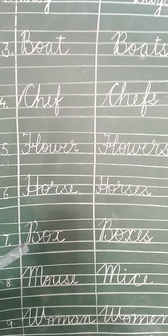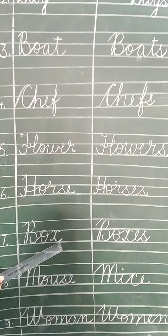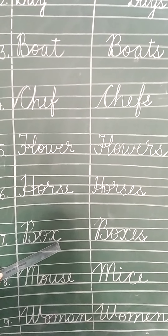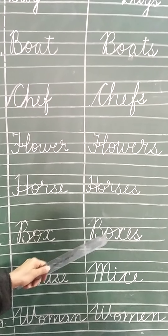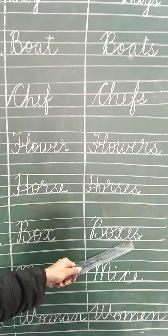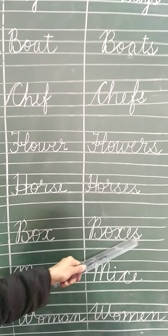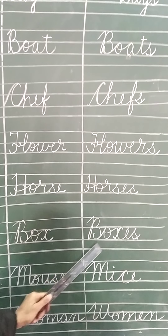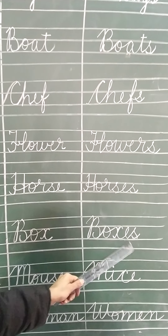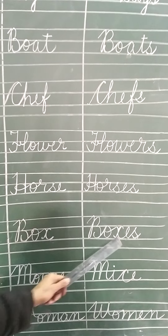Number seven is box — B, O, X. Students, see carefully. Here we add E, S — not just S. Then it becomes plural: boxes. Box becomes boxes.